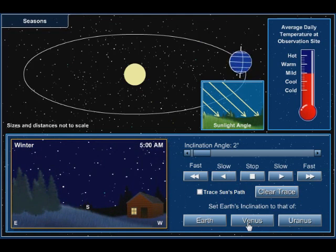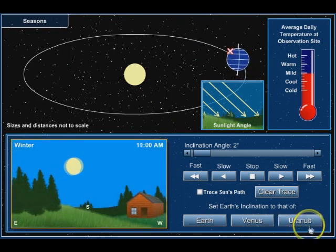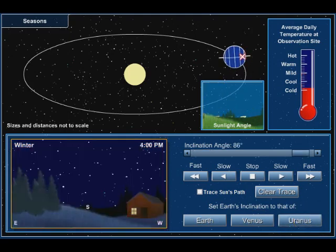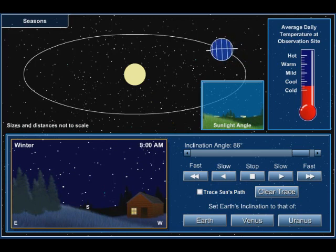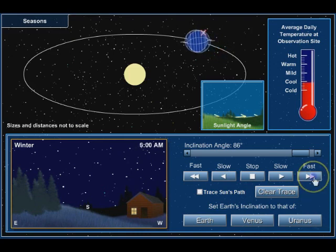So what does the rotation of Uranus look like? Uranus is basically rolling over on its side. It's got an inclination angle of about 86 degrees, or 98 degrees the other direction. So what does that look like? Let's speed this up so you can see.